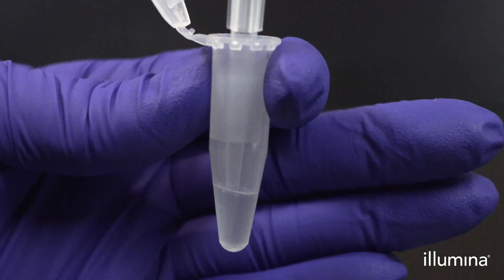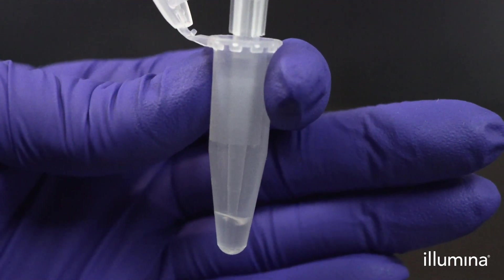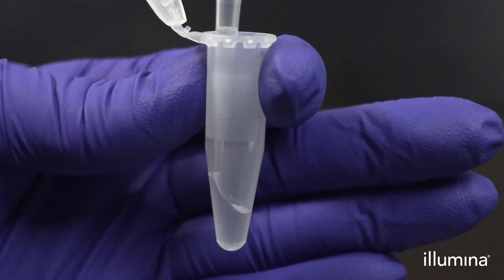Mix the cell-pip mixture 10 times using a standard-bore low-retention P200 pipette tip. It is important to pipette mix slowly to the first stop only to avoid creating foam or excessive bubbles.